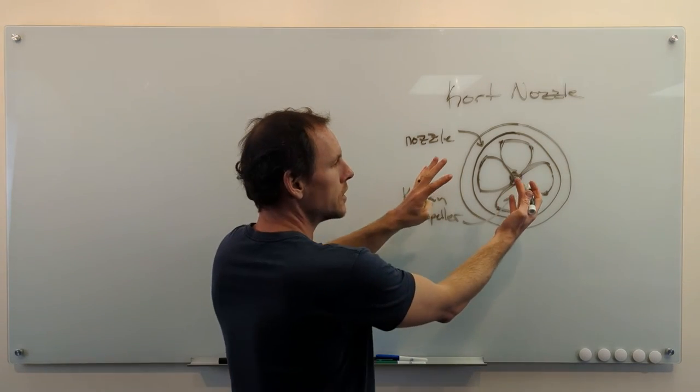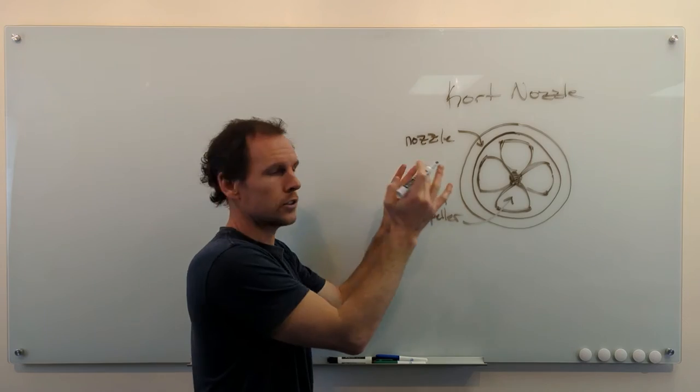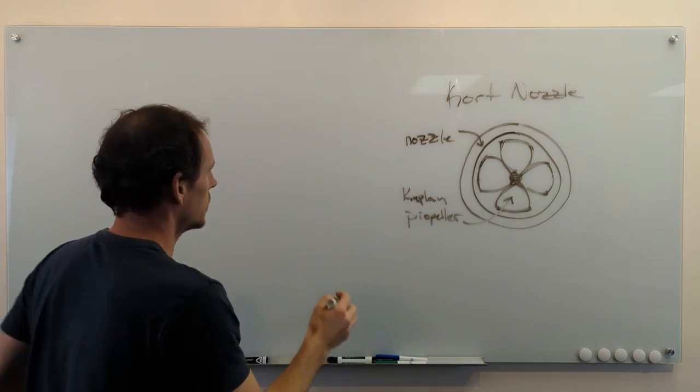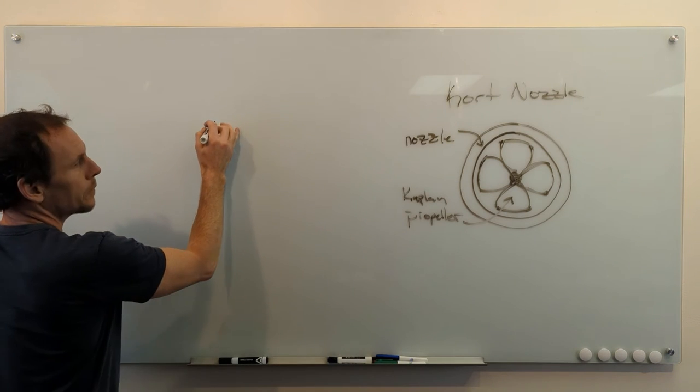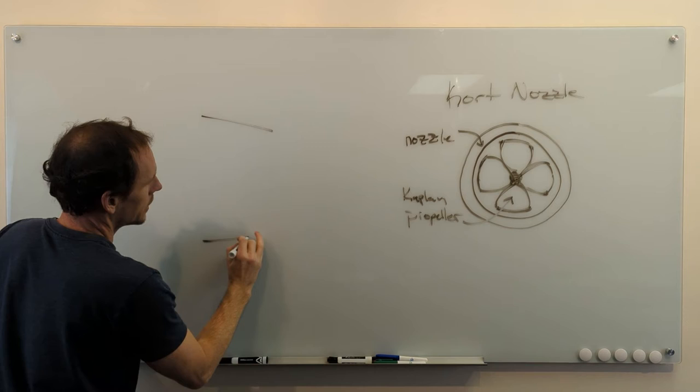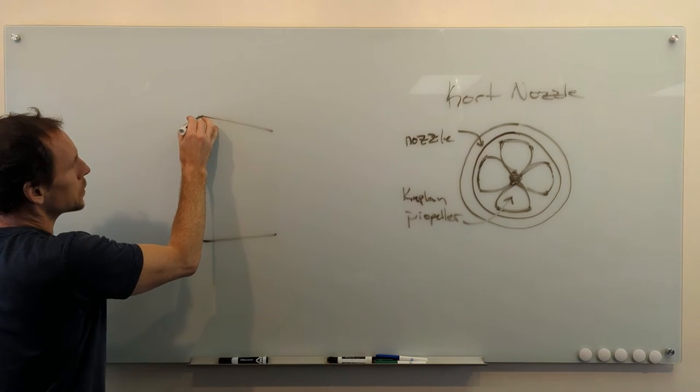Now if we take this, let's look at a cross section. So take this, bring it up, turn it sideways, cut it in half, we'll get a cross section. So an interesting thing about this kort nozzle is it's based on Bernoulli's principle.